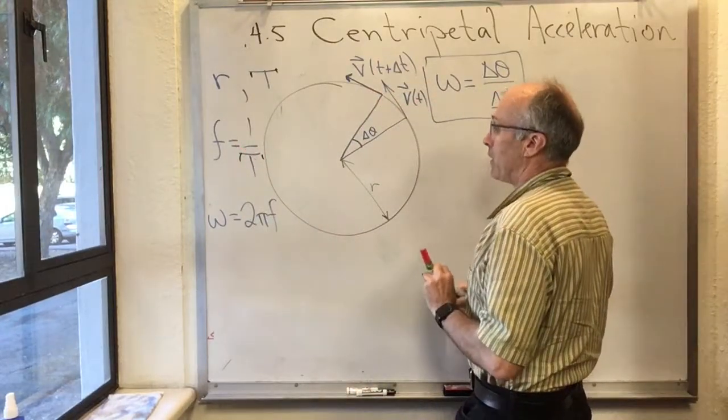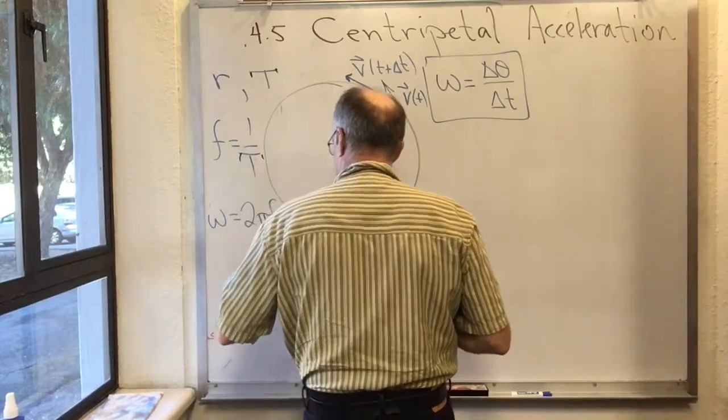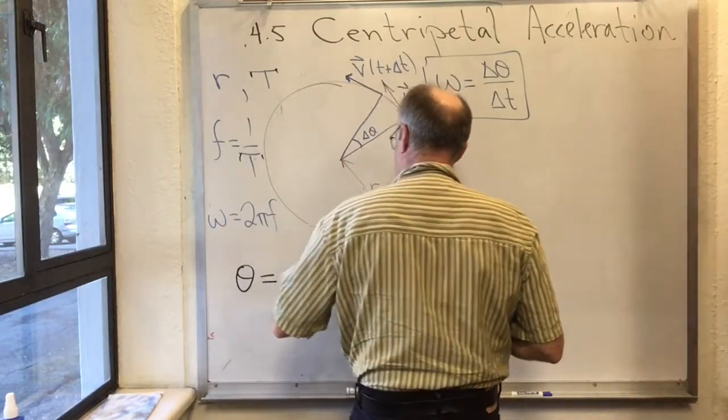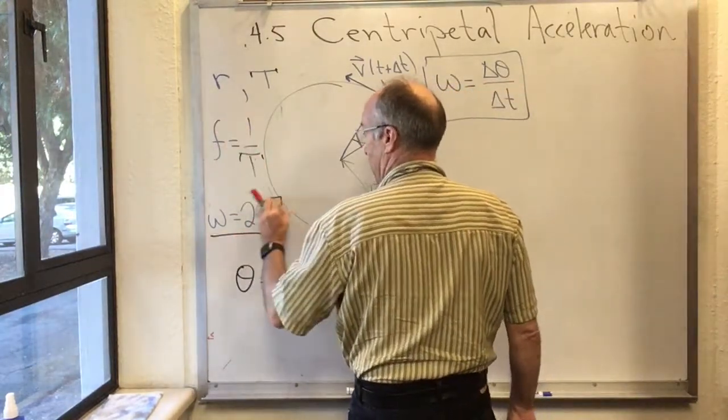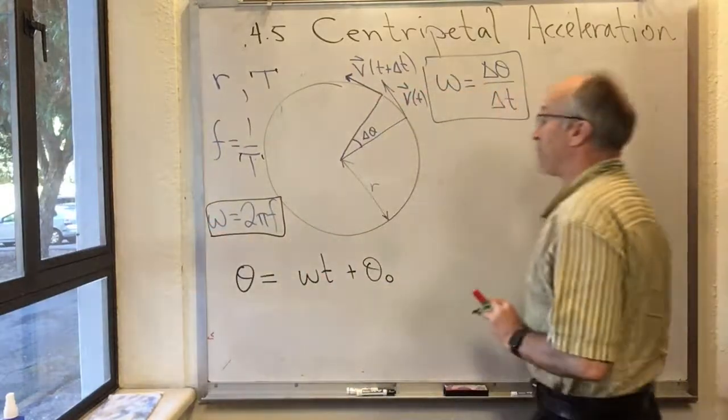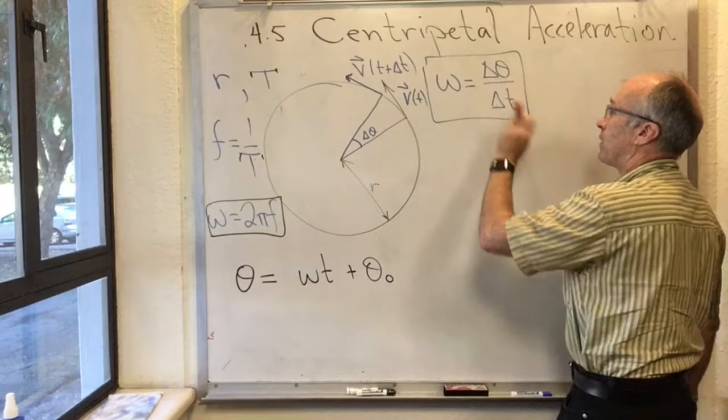Last time, I showed you that if theta is equal to omega T plus theta naught, then the relationship between these things is omega is 2 pi f. And I also showed that omega is delta theta over delta T.